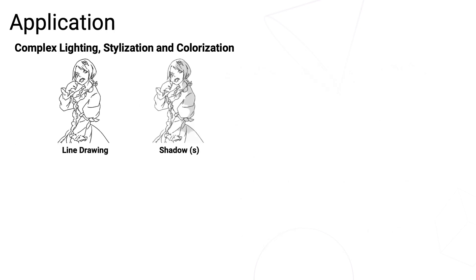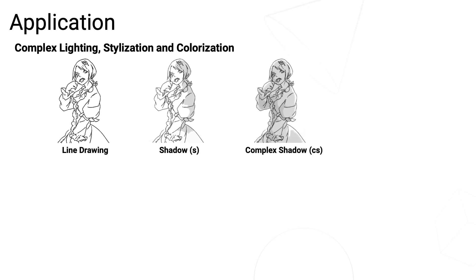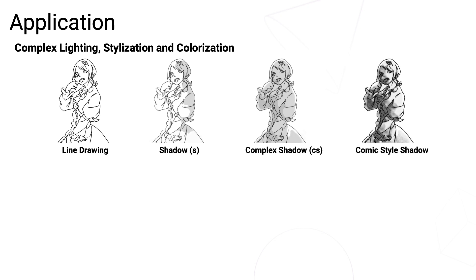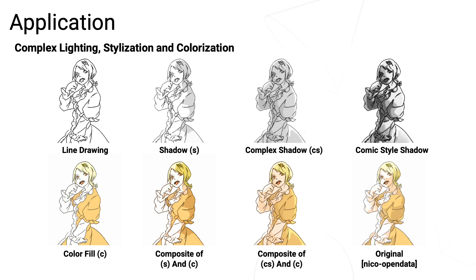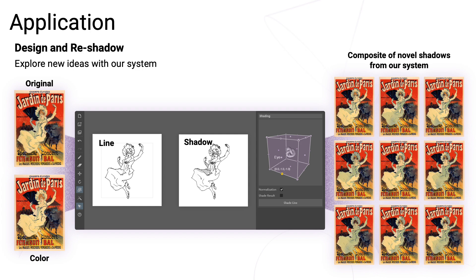Last but not least, since our output is pure shadow, it is easy for artists to customize their own artworks — such as shadows in complex lighting sources, toned shadows in comic style, and concatenating colored line art with shadows. The last image is the original art drawn by an artist. This is another example of our shadowing system applied to re-shadow artistic line drawings.